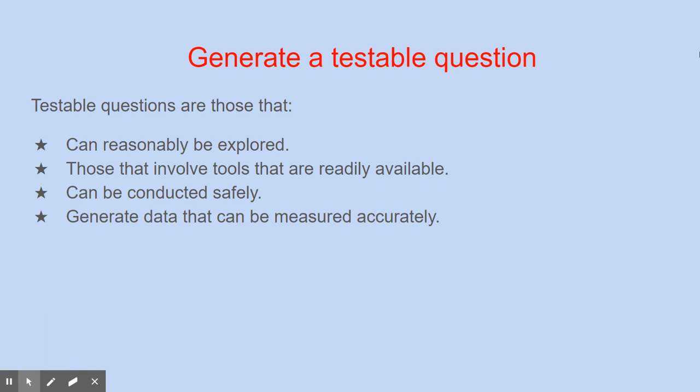We want to make sure we can conduct the investigation in a safe manner. For example, not all chemicals should be combined because it causes a dangerous side effect. So although that might be interesting to do, it's not necessarily safe to do. A safe experiment would be combining baking soda and vinegar to see what the reaction is.